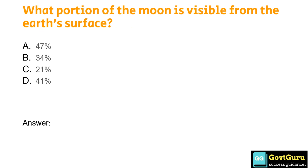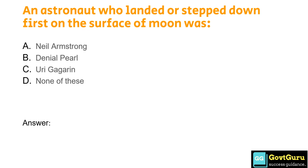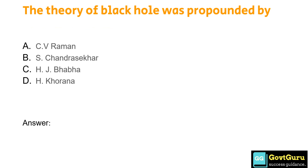What portion of the moon is visible from the Earth's surface? Option A: 47%, Option B: 34%, Option C: 21%, Option D: 41%. The answer is Option D, 41%. The astronaut who first stepped down on the surface of the moon was: Option A: Neil Armstrong, Option B: Daniel Pearl, Option C: Yuri Gagarin, Option D: None of these. The answer is Option A, Neil Armstrong.